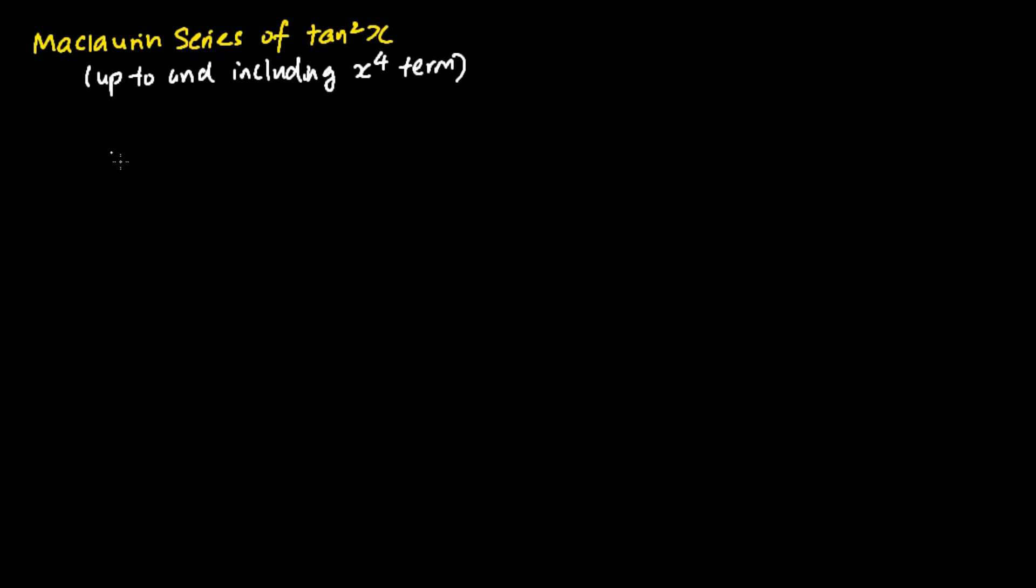Basically what we are going to do is that we are going to first understand that the integral of tangent square x dx is equals to tangent x minus x plus c. And we are going to first express this whole function as a Maclaurin series, and after which we differentiate this whole function to find the Maclaurin series of tangent square x up to and including the x to the power 4 term.